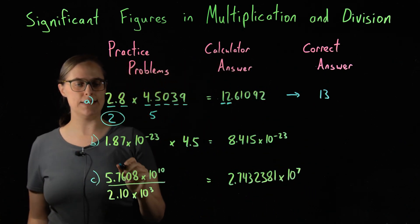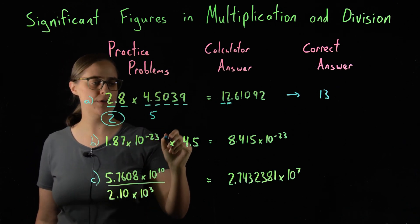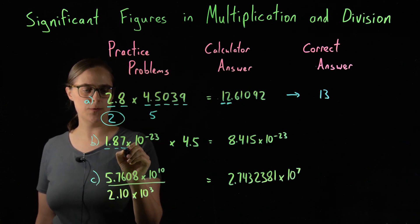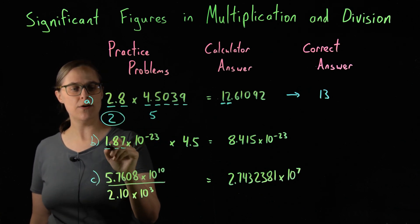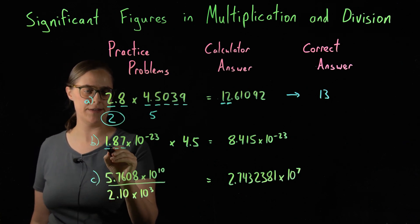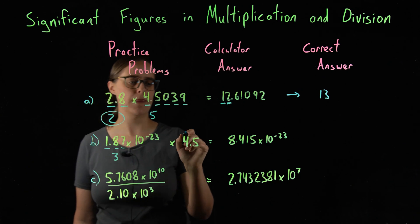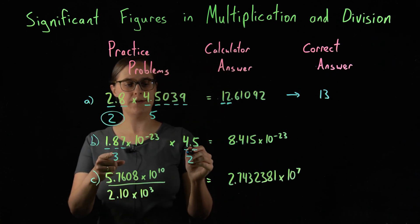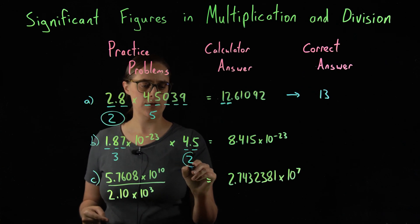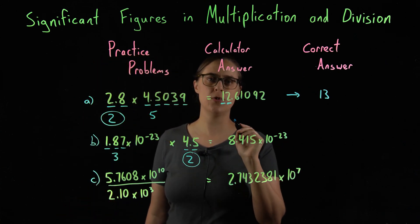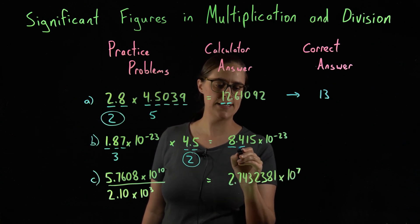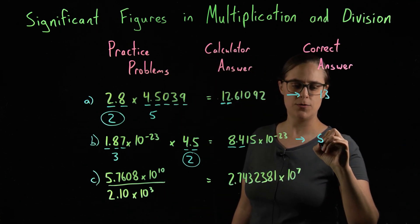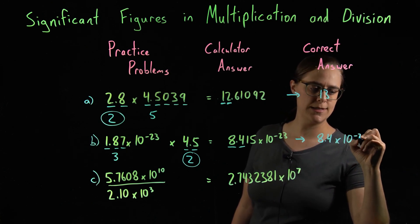Now Problem B: 1.87 × 10⁻²³ times 4.5. In scientific notation, all digits in the coefficient are significant, so 1.87 × 10⁻²³ has three significant figures. 4.5 has two significant figures. The lower of those is two, so our answer should have only two significant figures. We round to 8.4 × 10⁻²³.